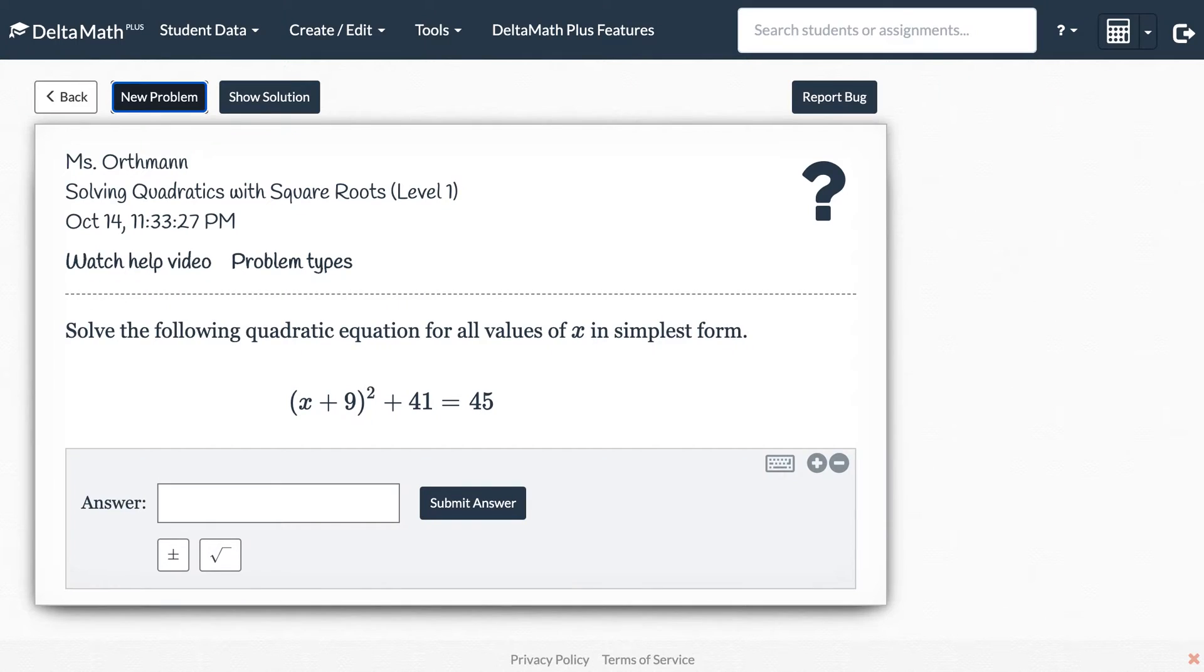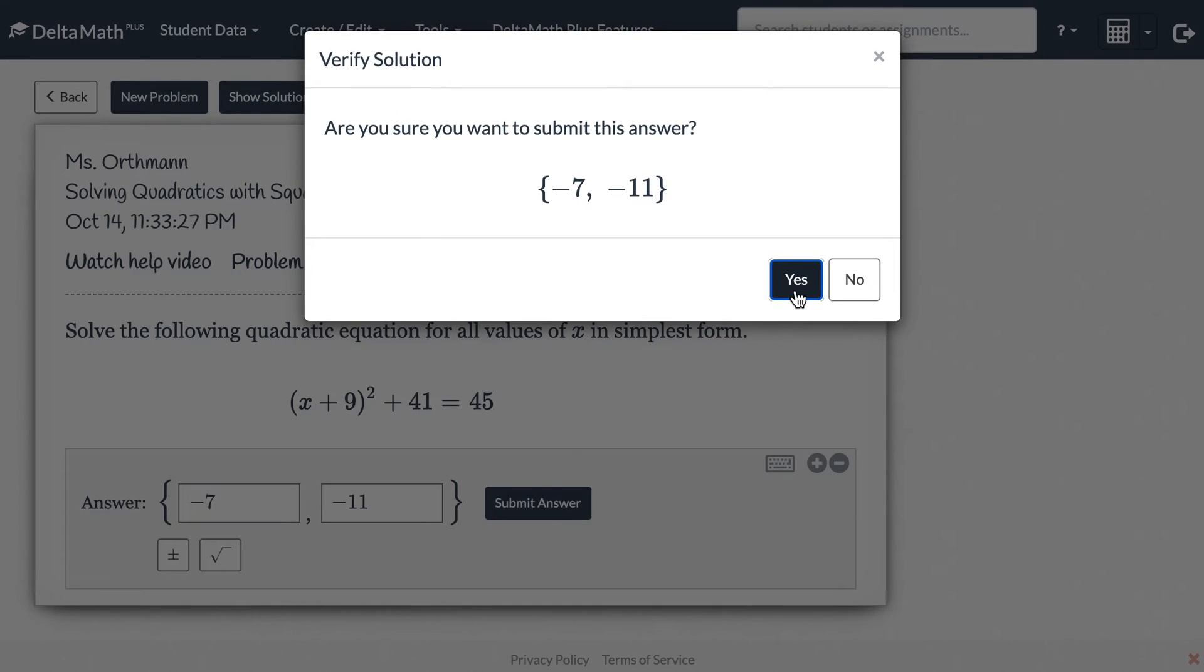If you want to enter two answers, what you're going to do is press this button, this plus button. It allows us to enter two answers. So I'm going to enter both of my answers, submit, and here we go.